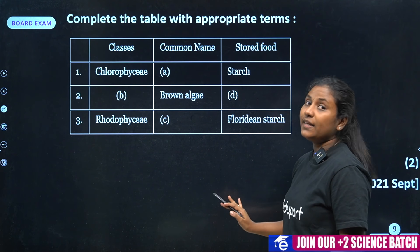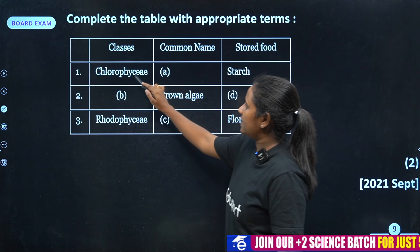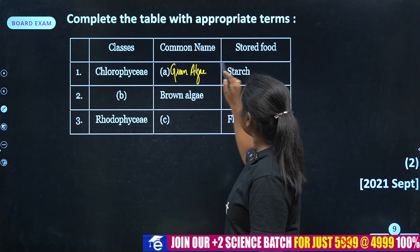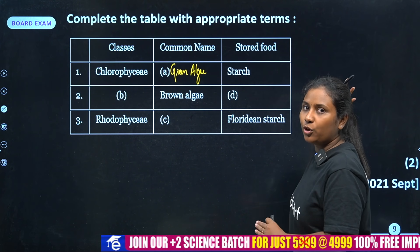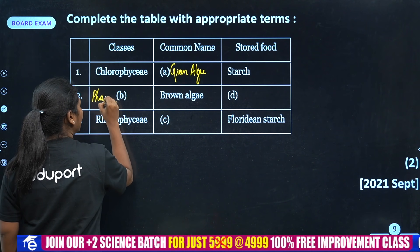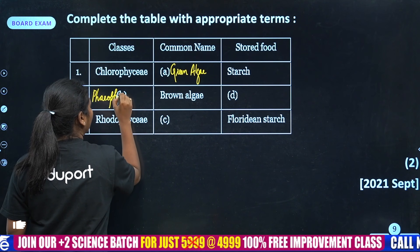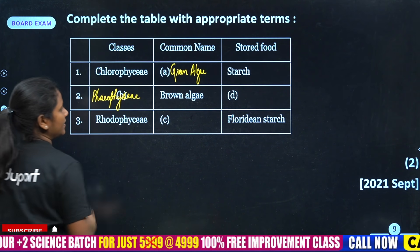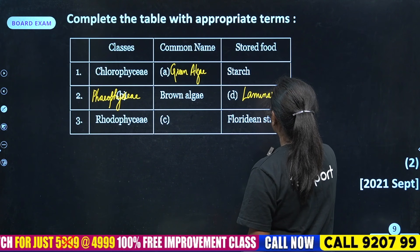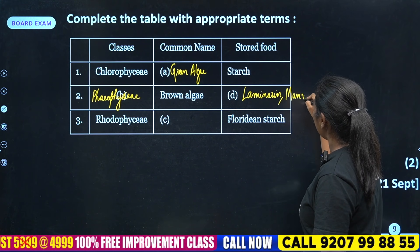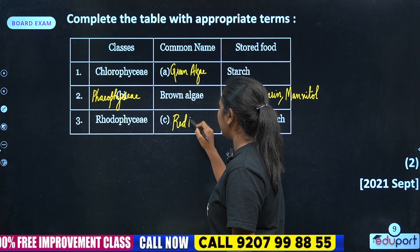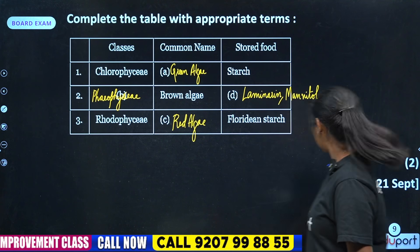Algae classes: Chlorophyceae — the common name is Green Algae. For Brown Algae, the stored food is Mannitol and Laminarin. Rhodophyceae — the common name is Red Algae. Simple. There are 2 marks.